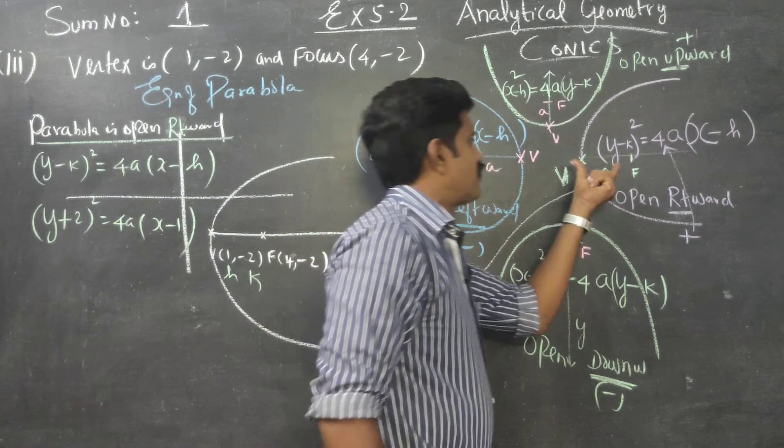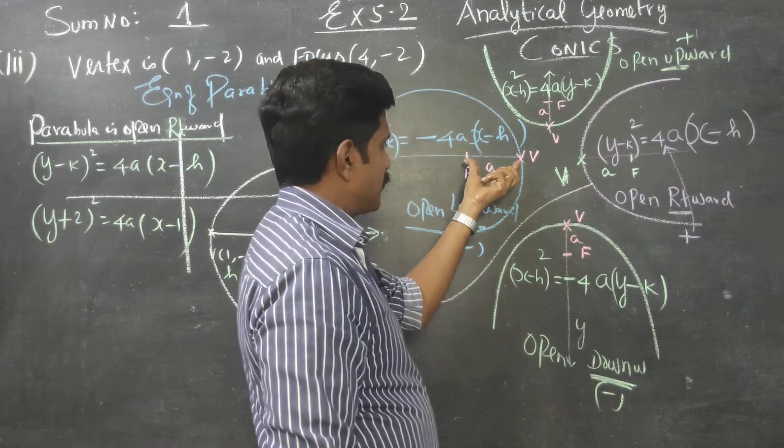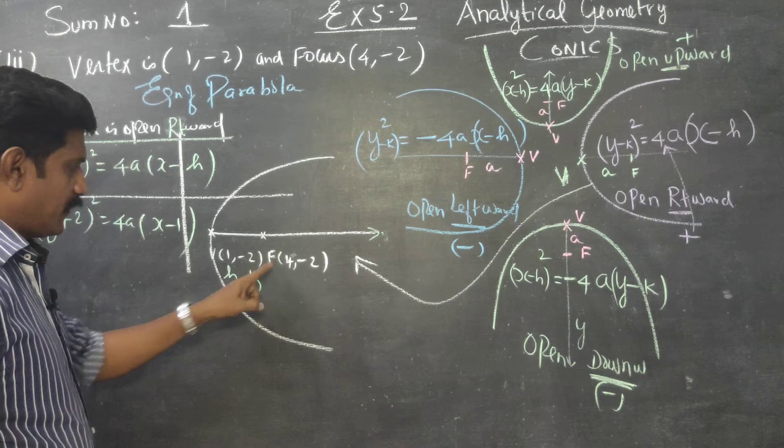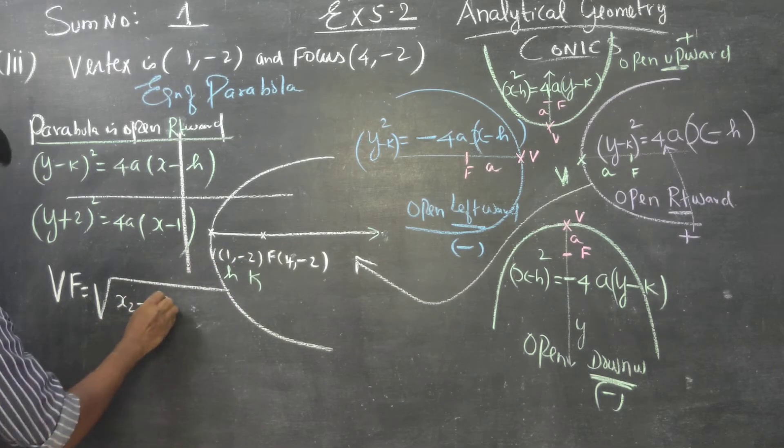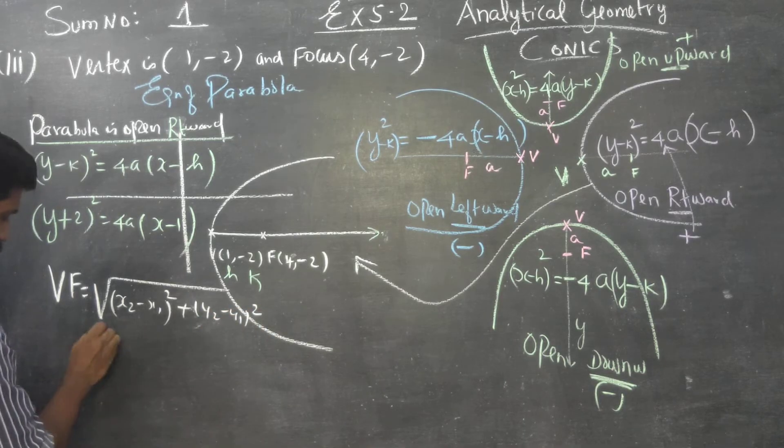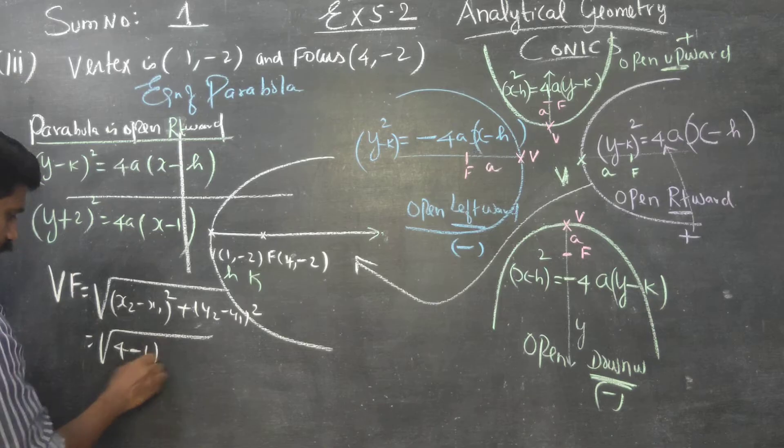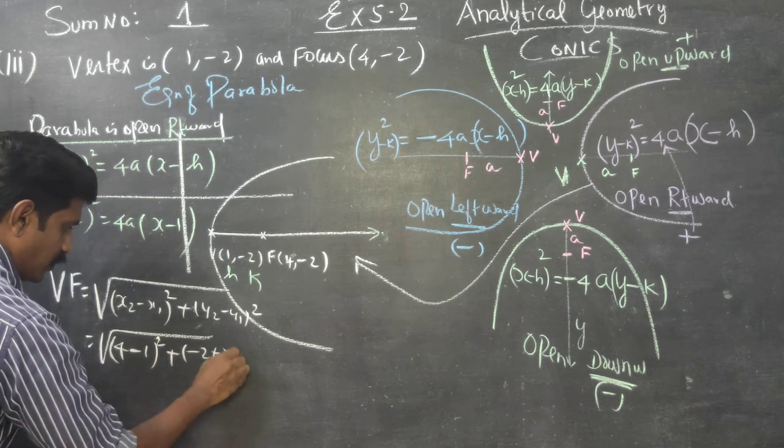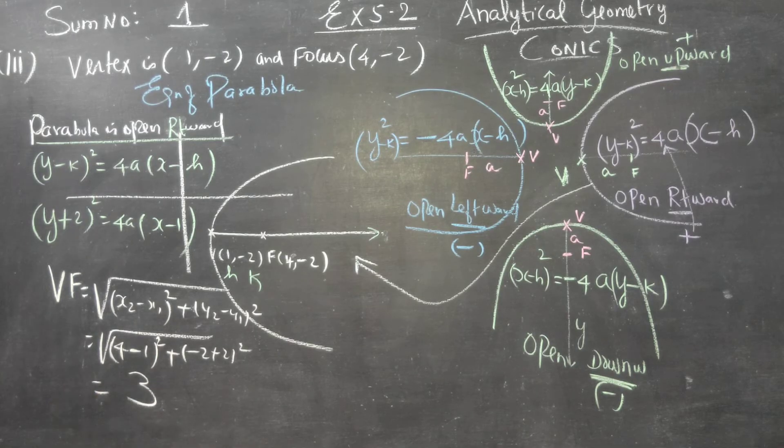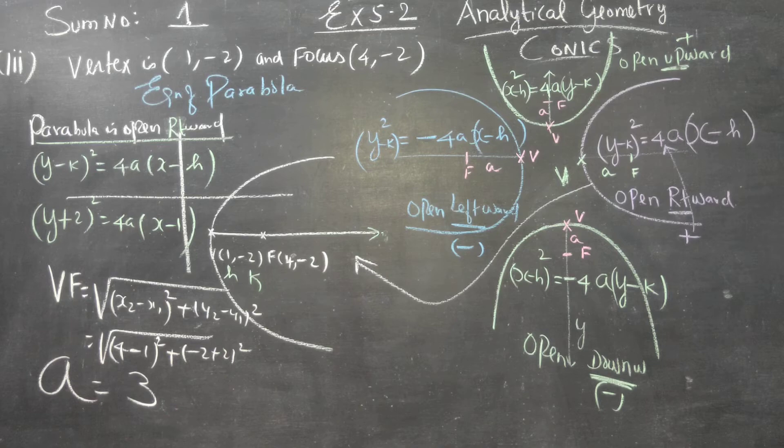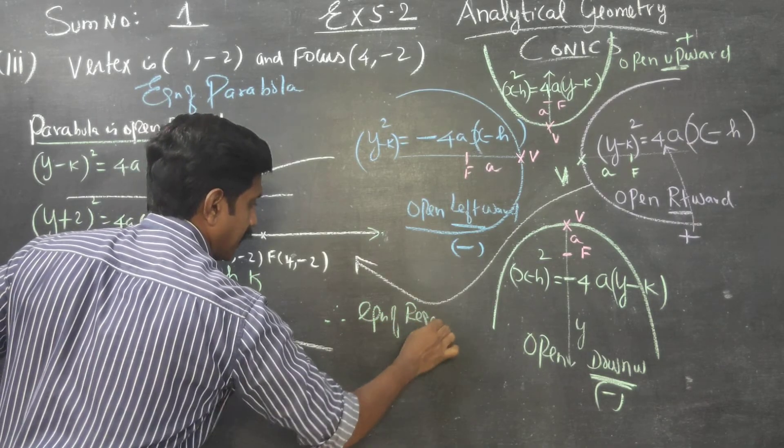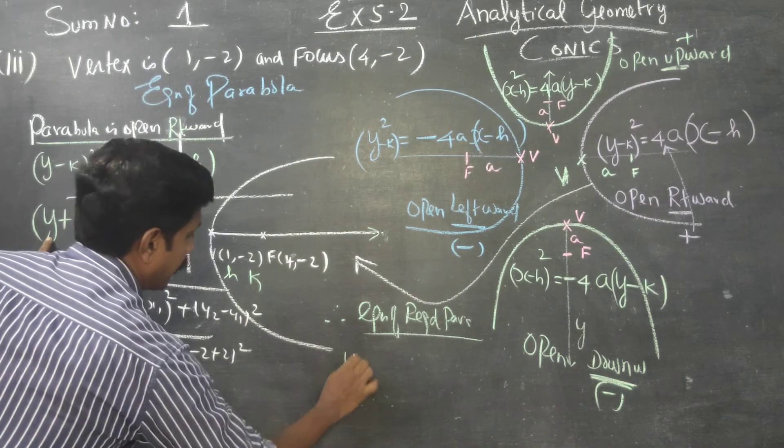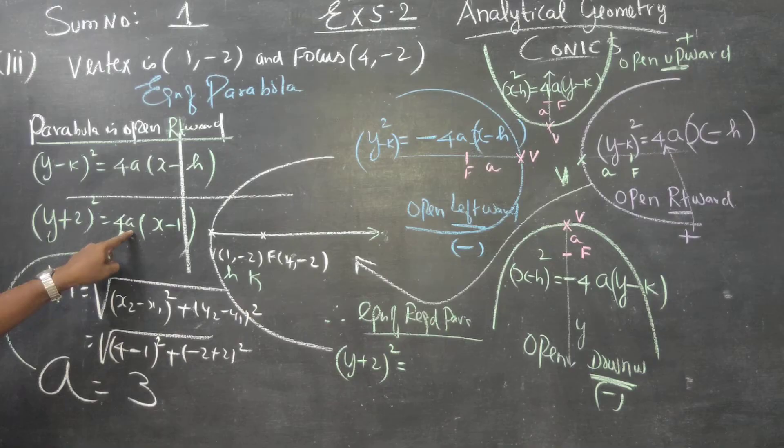What is a? From the starting I am very clearly telling the distance between VF is a. Using distance formula: square root of (x2-x1)² + (y2-y1)². That is (4-1)² + (-2+2)² = 3². The answer is 3. My VF is small letter a, so a = 3.